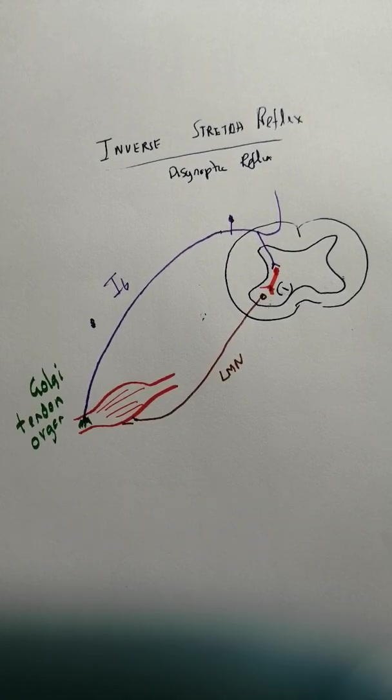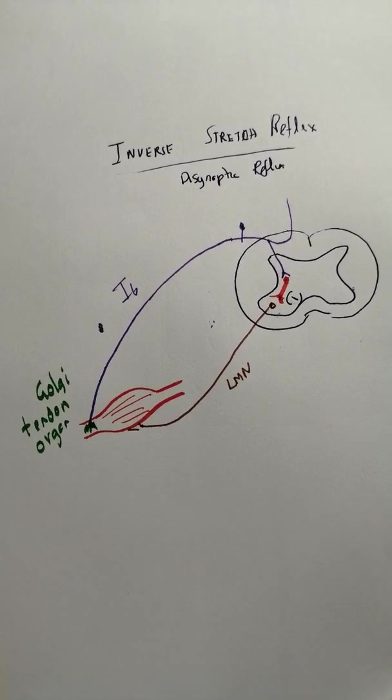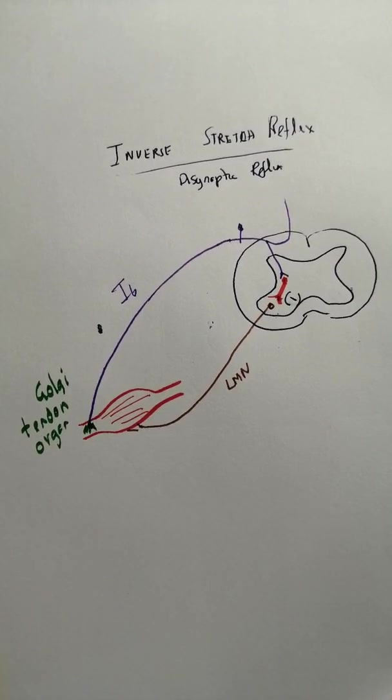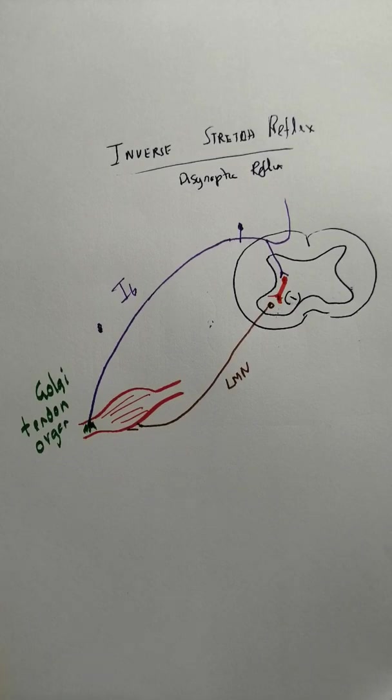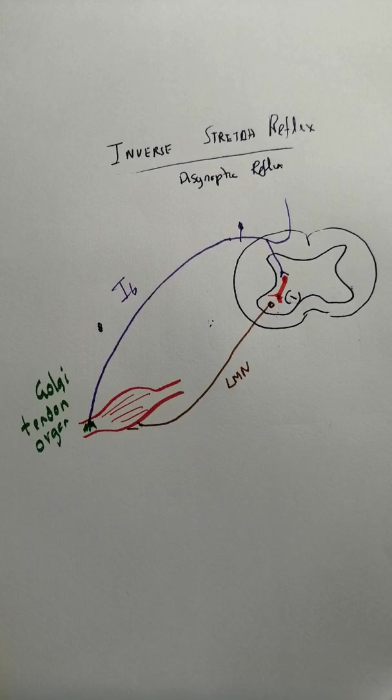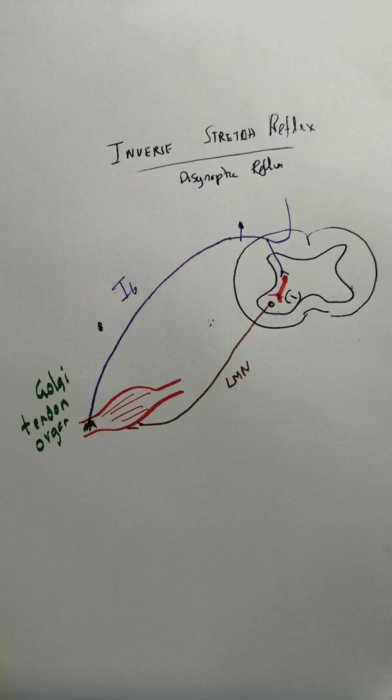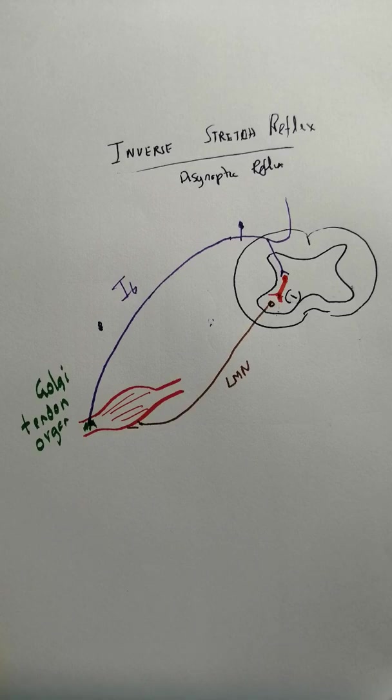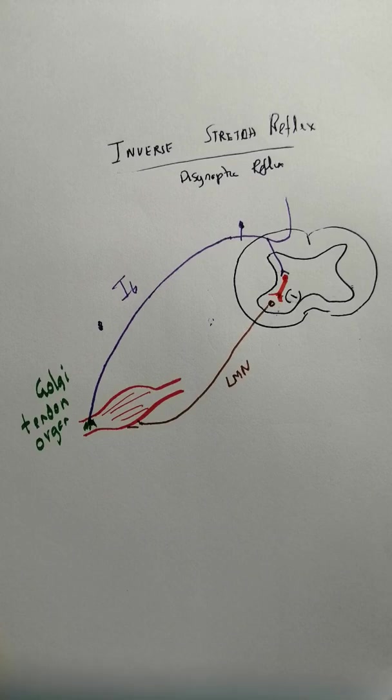That's inverse stretch reflex. The use of this reflex is that it senses the length of the muscle and also senses force. If a muscle is stretched greatly and there's a chance of it getting damaged - for example if you are lifting a very heavy weight and there's a chance of the tendon being pulled out of the bone - then the muscle has to relax, and that is done by the inverse stretch reflex.